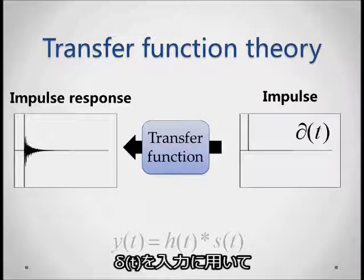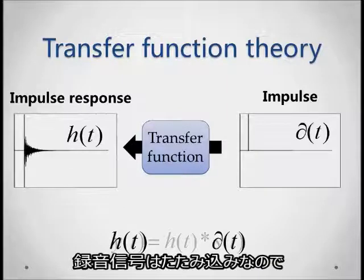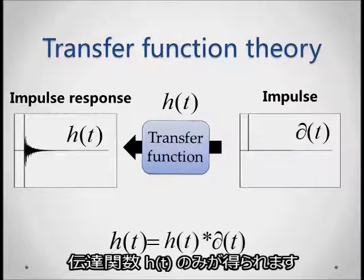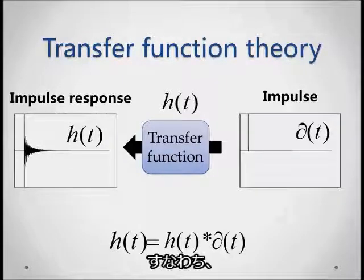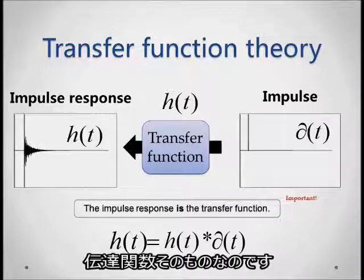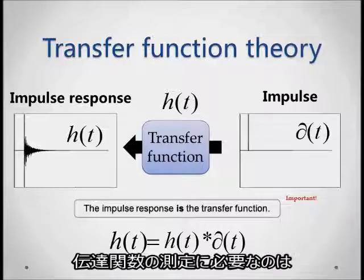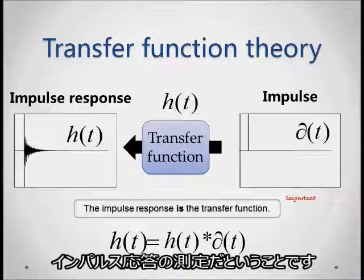In fact, when we play the very basic impulse delta and record the impulse response, the recording is essentially the pure effect of the environment. In other words, the recorded impulse response actually is the transfer function. What that means is that to get the transfer function, all we need to do is record an impulse.